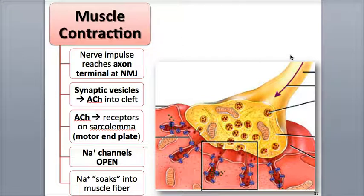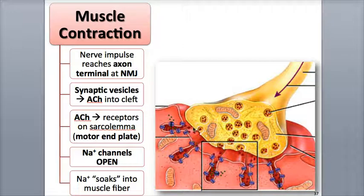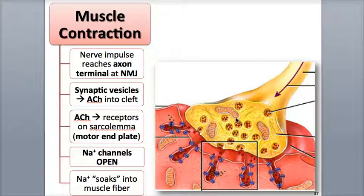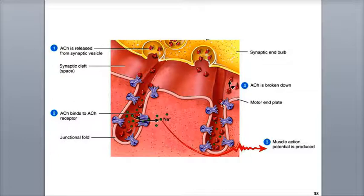When the nerve action potential reaches the synaptic end bulb, the change of voltage from negative to positive causes voltage-gated calcium ion channels to open within the membrane. Calcium ions at high concentrations in the extracellular fluid diffuse into the neuron through these channels, which causes the synaptic vesicles to undergo exocytosis. The vesicles fuse with the neuron's membrane and secrete their acetylcholine into the synaptic cleft, which diffuses across the cleft to the motor end plate of the muscle fiber.